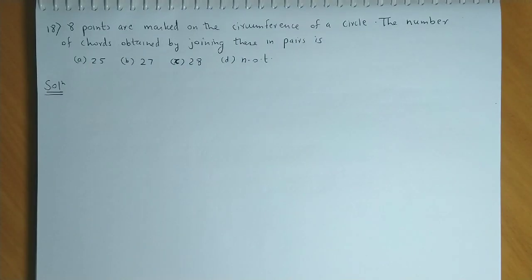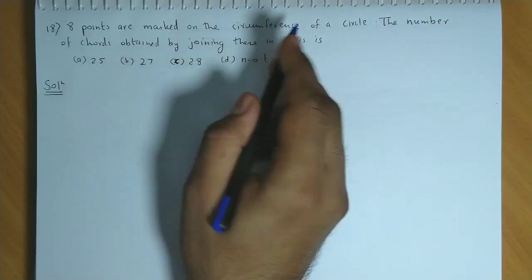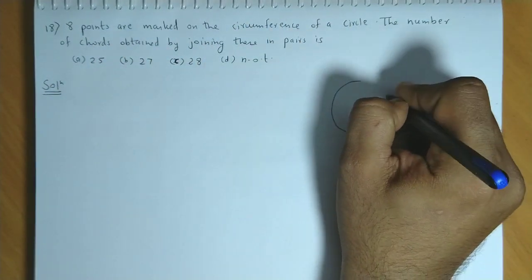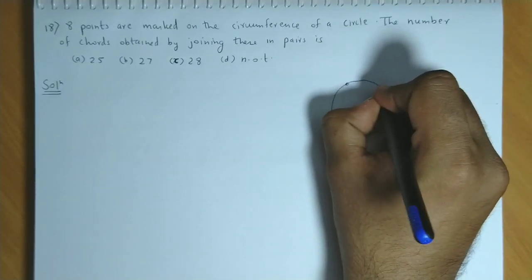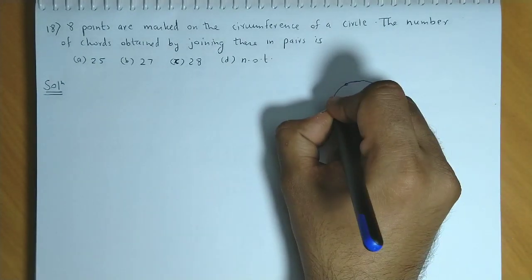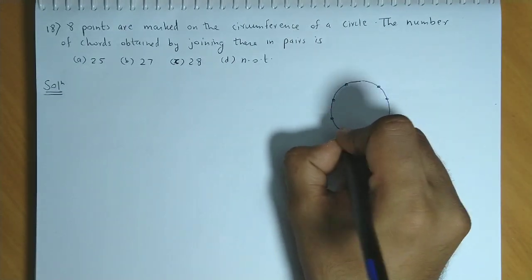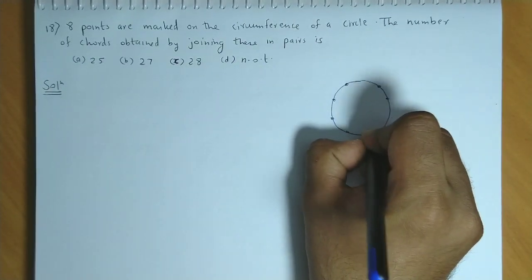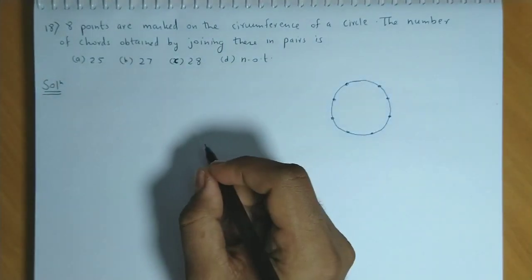Question number 18: 8 points are marked on the circumference of a circle — points 1, 2, 3, 4, 5, 6, 7, and 8. So you have 8 points.